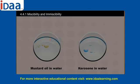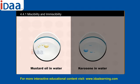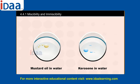By contrast, liquids are said to be immiscible if in some proportion they form a heterogeneous solution. It means that they cannot be mixed together and form a separate layer. Examples include mustard oil, kerosene, and water.